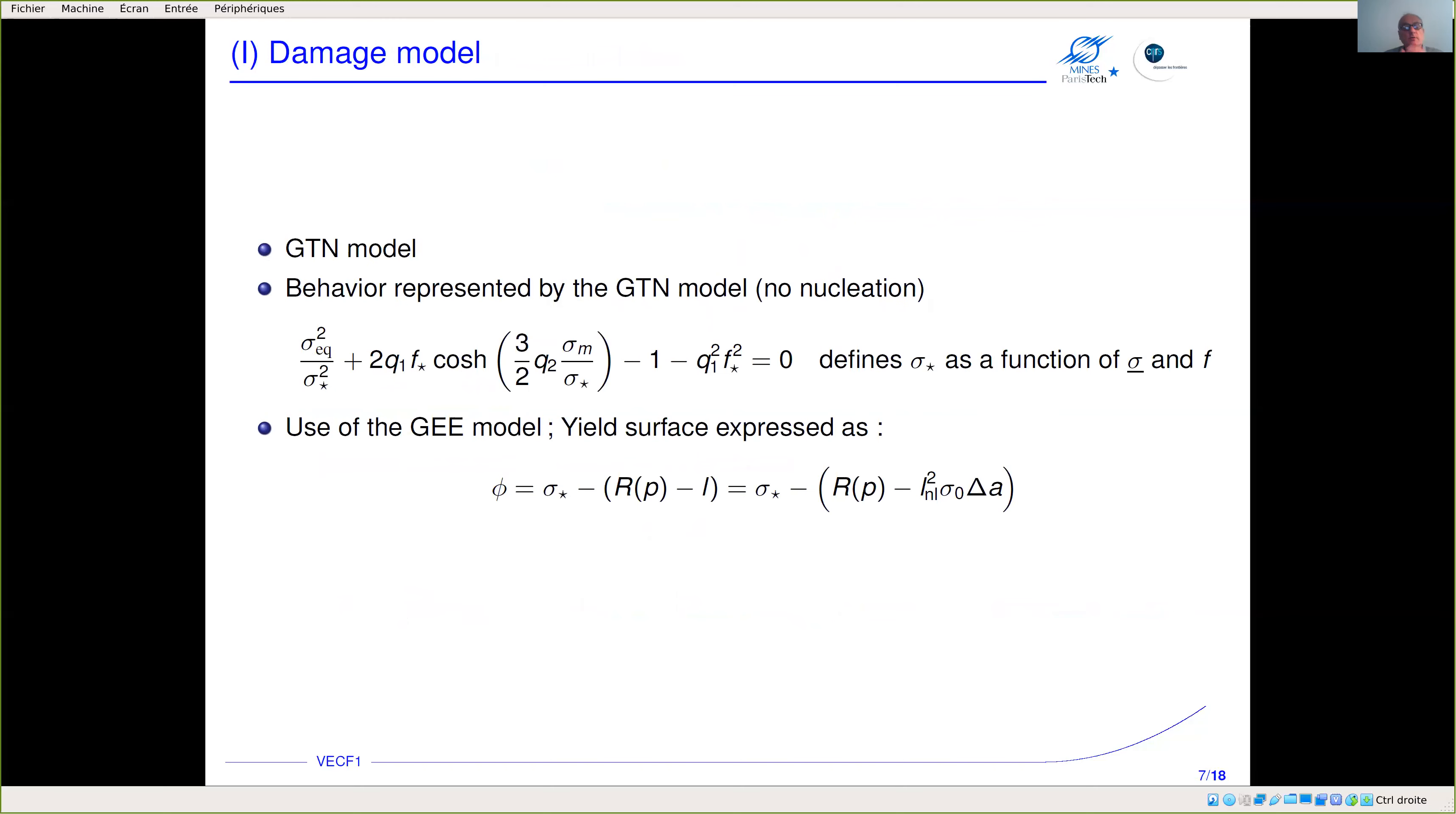The damage model we use here—but any kind of model could be used—is the well-known GTN model. The equation usually used to describe the yield surface is here used to define an equivalent stress sigma star, so we can rewrite the yield surface as follows. This formulation is exactly equivalent to the standard GTN model but it's easier to implement.